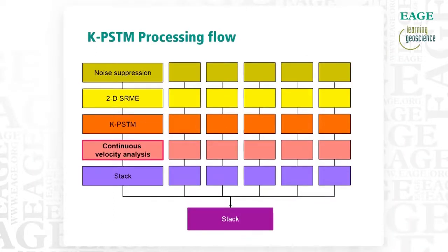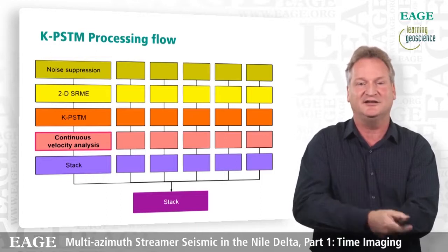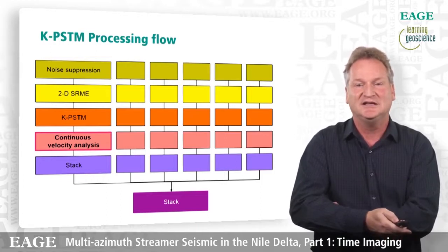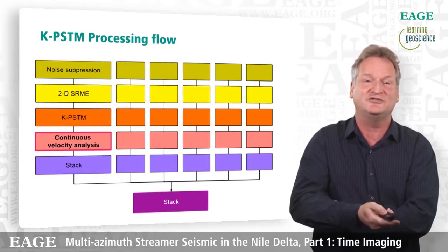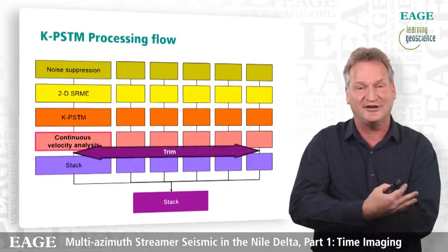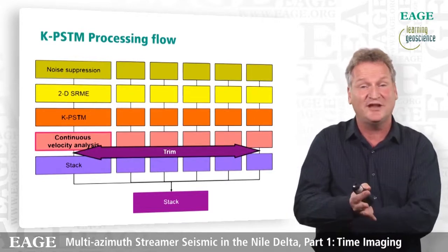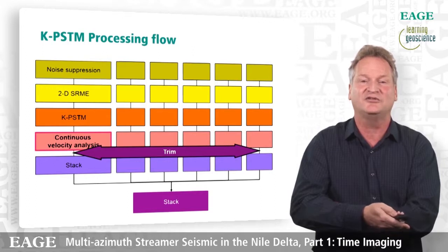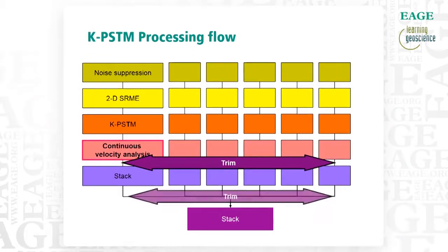We did pick individual residuals for each survey, doing continuous velocity analysis — picking every CDP rather than on a 100 or 500 meter grid — to get the data as flat as possible. Because there are velocity issues that probably require depth imaging, we also applied trim statics on each of the surveys, and then again after stack before combining all datasets. It's a standard processing sequence followed with trim statics before we add all six surveys together.